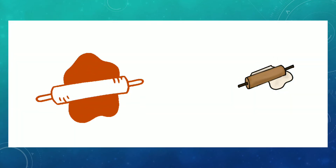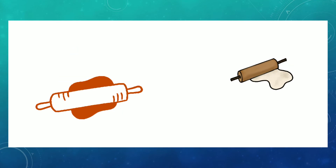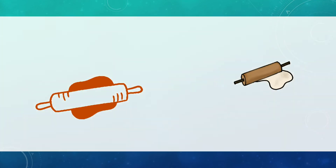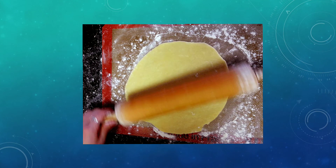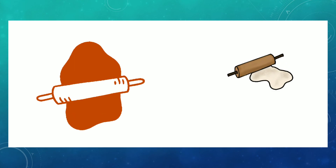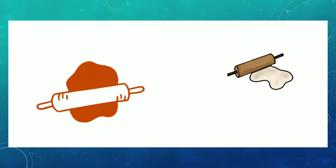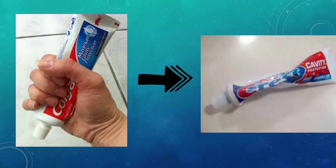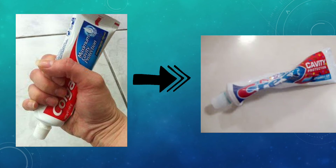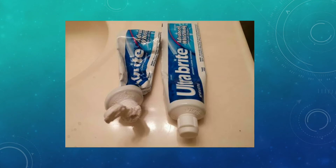The shape of dough changes on pressing with the rolling pin. When we are making chapatis, the shape of the dough changes. When we press the dough with the rolling pin we apply force, so the shape of the dough changes on applying force. Now see this toothpaste tube. The shape of the toothpaste tube changes when we squeeze it, because we apply force while squeezing it to take out the toothpaste.